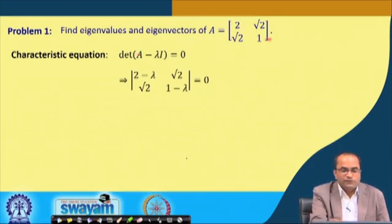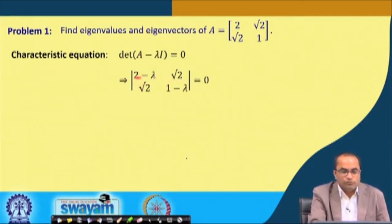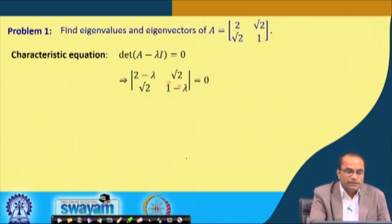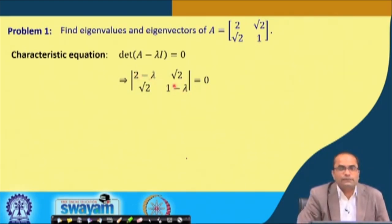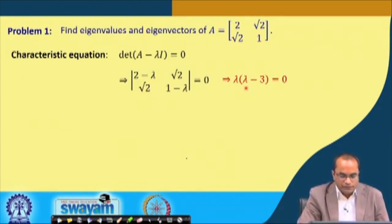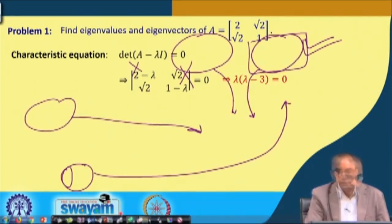Here lambda will be subtracted from the diagonal entries, otherwise this is just the matrix A. So we have 2 minus lambda and square root 2 in the first row, and square root 2 and 1 minus lambda in the second row, set equal to zero. We can multiply (2 minus lambda)(1 minus lambda) and subtract the product of the off-diagonal terms.